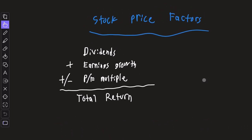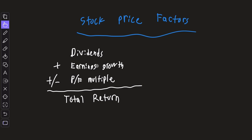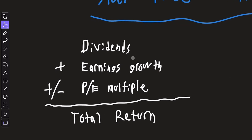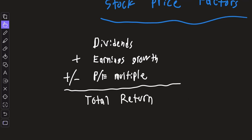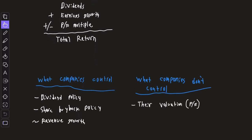If we come over to the blackboard here, these are the main factors that drive stock price change, and it's actually surprisingly simple. There's dividends, there's growth in earnings, and then there's the PE ratio applied to that earnings. And that's what gives you the total return of a stock. These main factors can be split up into two different groups.